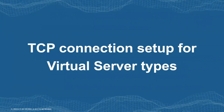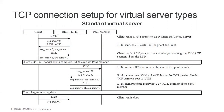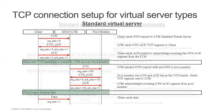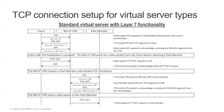Now this is very interesting, because for each different type of virtual server there are different types of connections. Let's go over the first one — the standard virtual server. A client sends a SYN packet to us, we reply with a SYN-ACK, we receive the ACK, and now the TCP handshake is complete. It's time for the pool member to be chosen by the LTM. We send a SYN packet to initiate a connection to the pool member, we receive the SYN-ACK, we send the ACK. Now we receive data from the client and we forward it to the pool member.